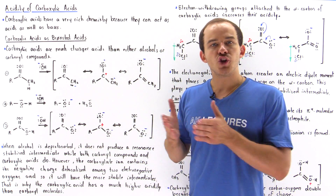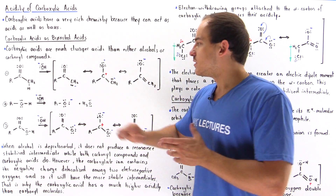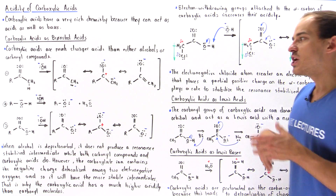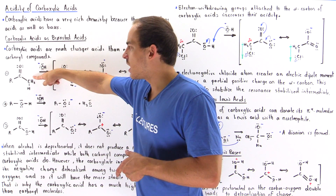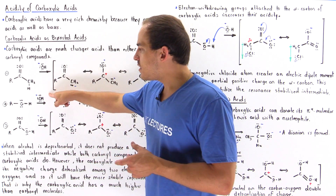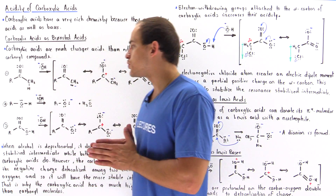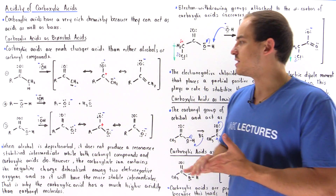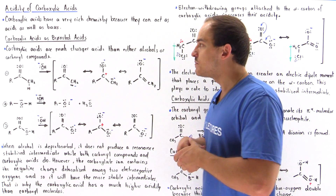Carboxylic acids have a much higher acidity — they're much better at donating an H atom than alcohols or carbonyl compounds. To see why, let's look at the following diagram. Suppose we have some Brønsted-Lowry base that can take away an H atom. When alcohol is deprotonated, we form the alkoxide, which is not resonance-stabilized. So alcohols are not very good Brønsted-Lowry acids compared to carbonyl compounds or carboxylic acids. But carboxylic acids are still better Brønsted-Lowry acids and have higher acidity than carbonyl compounds.